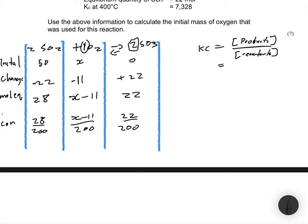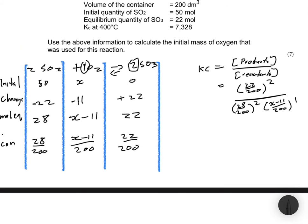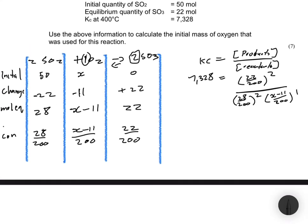The Kc expression equals the concentration of products divided by the concentration of reactants. Our only product is SO₃, so we have: Kc = (22/200)² ÷ [(28/200)² × (x−11)/200]. We are given that Kc = 7.328, so now we solve for x.